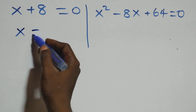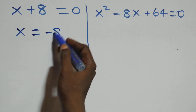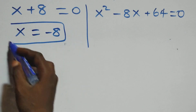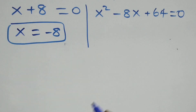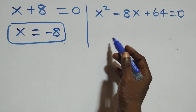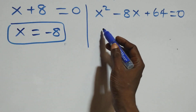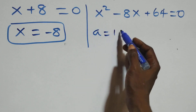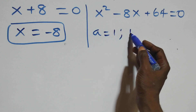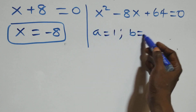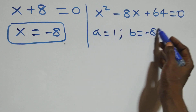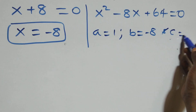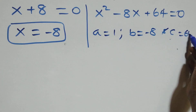Solving on this side: we have x equals to minus 8, which is a real solution. Then here we have a quadratic equation where a equals to 1, b equals to minus 8, and c equals to 64.